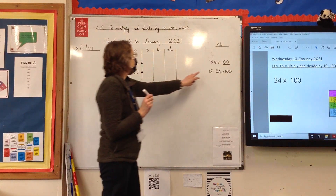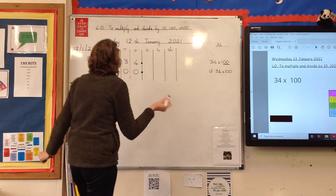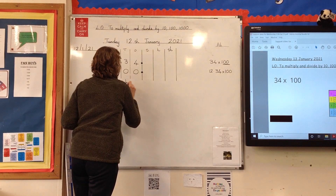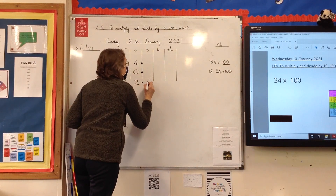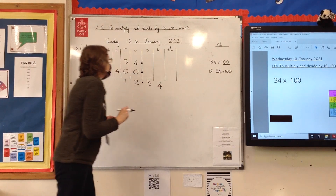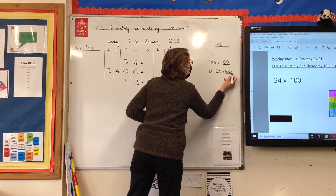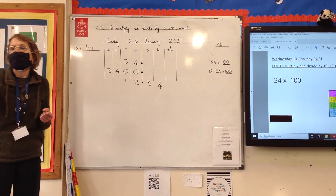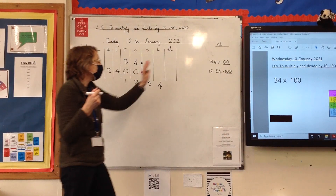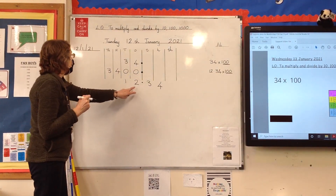The next one — think about how we would do 12.34 times 100. Let me put 12 in, then the decimal point, three, four. Again, we're multiplying by 100. What's the big clue as to how many places we need to move it? Two zeros, two places. Remember: two zeros, two places. So everything would move two places.